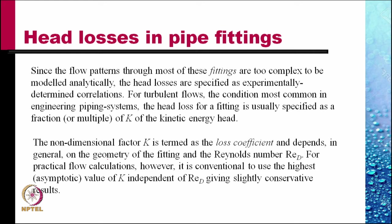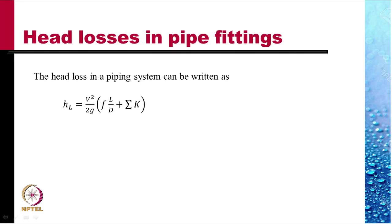Therefore, the head loss through any fitting can be expressed as H_L equals k times the velocity head. So, the head loss is one half V squared by g into F L by D plus summation k.